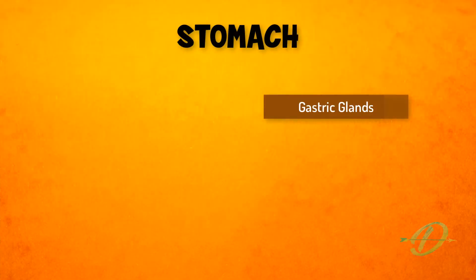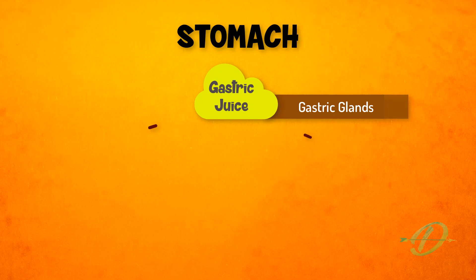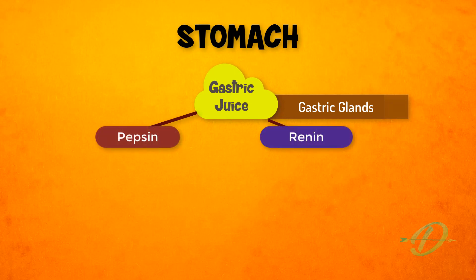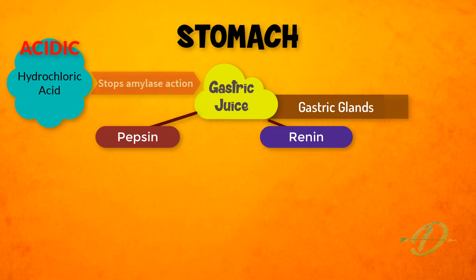When food enters the stomach, gastric glands at the epithelial lining of the stomach secrete gastric juice, which contains the enzymes pepsin and renin. The acidic condition of hydrochloric acid in gastric juice stops the activity of salivary amylase and provides optimal conditions for